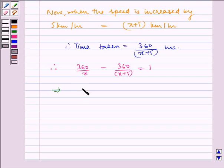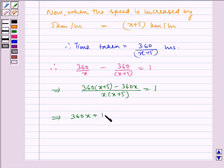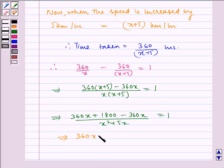Now solving this, we get 360 into x plus 5 minus 360x whole divided by x into x plus 5 equals 1, which equals 360x plus 1800 minus 360x divided by x square plus 5x equals 1.